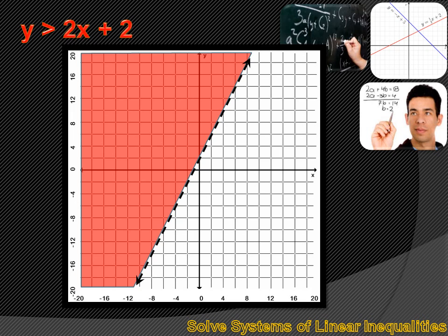You've done that before, and it's not that complicated. But what if we added a second inequality? Now we have a system of inequalities — a system of linear inequalities. Y is greater than 2x plus 2, and also y is less than or equal to minus x minus 4.